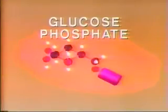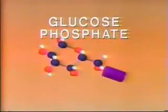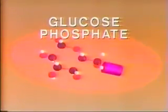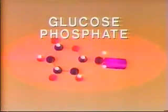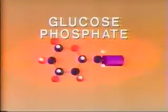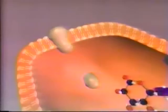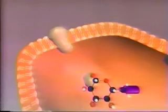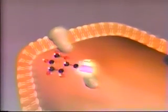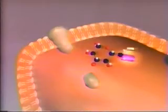While half of ATP's energy was used in the reaction, the remainder is held in the energized glucose phosphate. The placement of the negatively charged phosphate group on the glucose confines glucose phosphate within the cell.